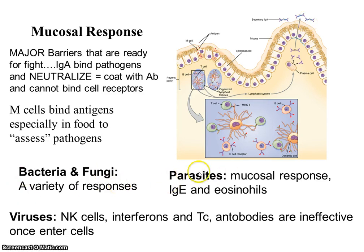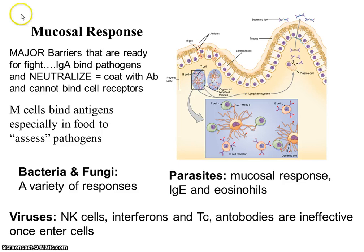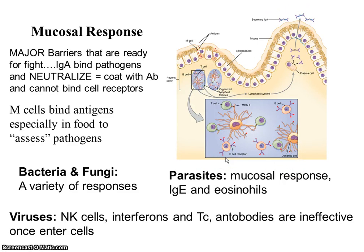For bacteria and fungi, you get a variety of responses. For parasites, the mucosal responses involve immunoglobulin E and eosinophils. For viruses, the response involves natural killer cells, interferons, cytotoxic T cells, and antibodies - though antibodies are ineffective once the virus enters cells. These are the mediators. Below the surface are T cells, B cells, and presenting cells. Different components of our immune response are better suited to different groups of pathogens, with plasma cells secreting antibodies out into fluids.